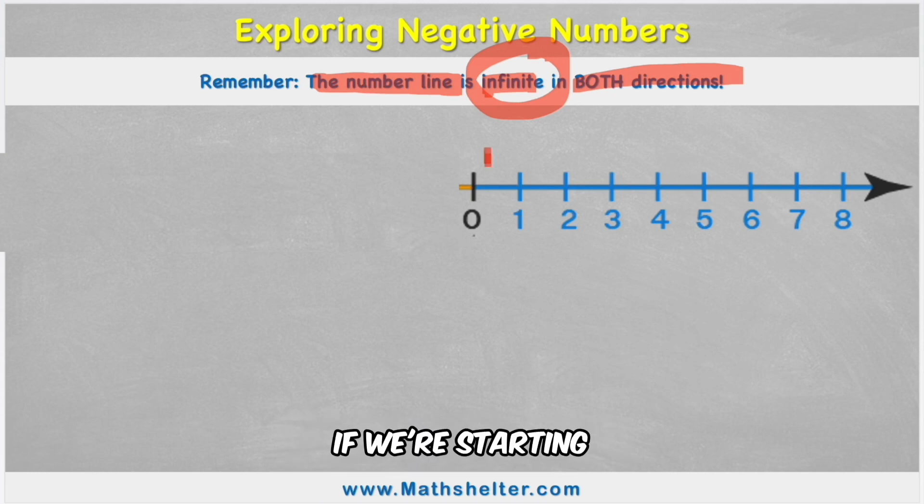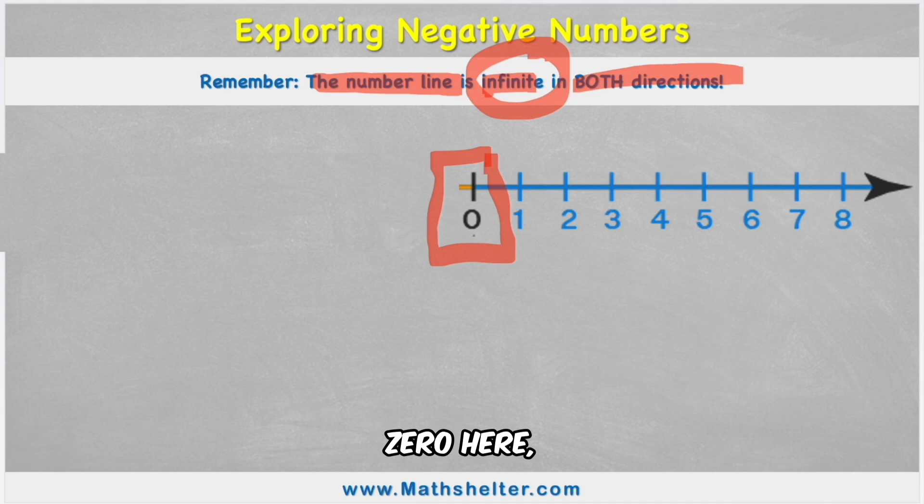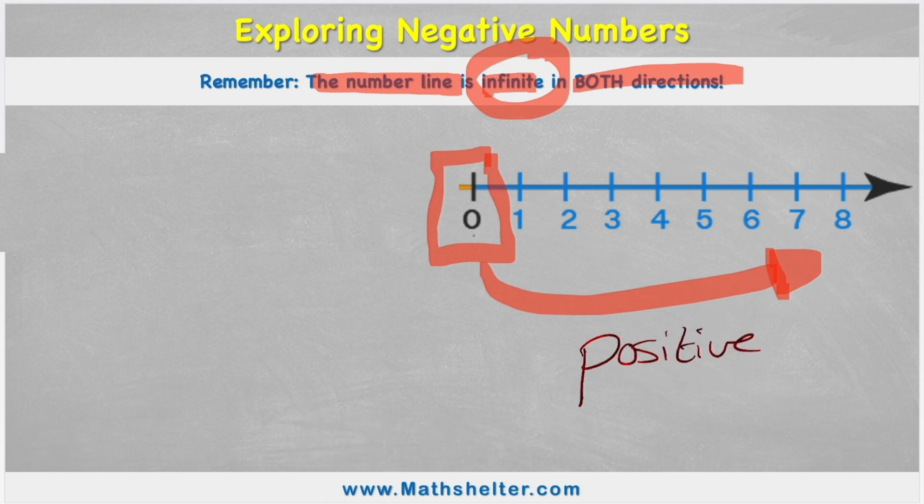So what does that mean? Well, if we're starting from our number zero here, everything to the right along our number line, we call positive numbers. And here we only have one, two, three, four, five, six, seven, eight.